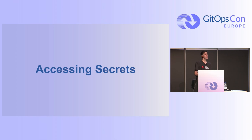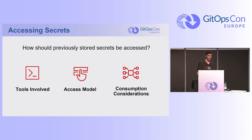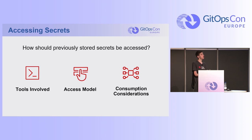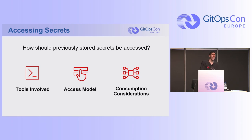Number two: how do I access my values once I've stored them? Three things to consider: which tools are available for accessing secrets, what access model should we implement, and we also need to think ahead — how are these secrets going to be consumed? Because if we understand how they'll be consumed, it may determine how we want to access them.